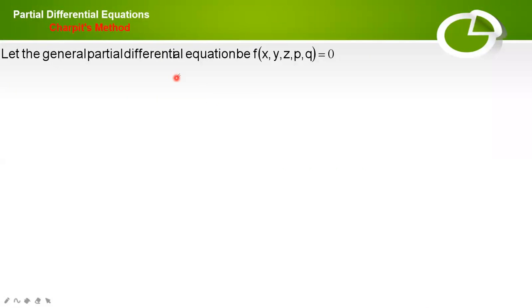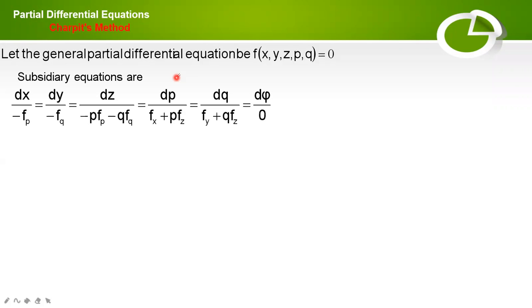This is the general form of a partial differential equation, and this is the subsidiary equation. Using this subsidiary equation, we have to find the values of either p or q, and substitute p or q in the given equation. Then find the solution of z using z equal to p dx plus q dy. These are the three steps you have to remember.